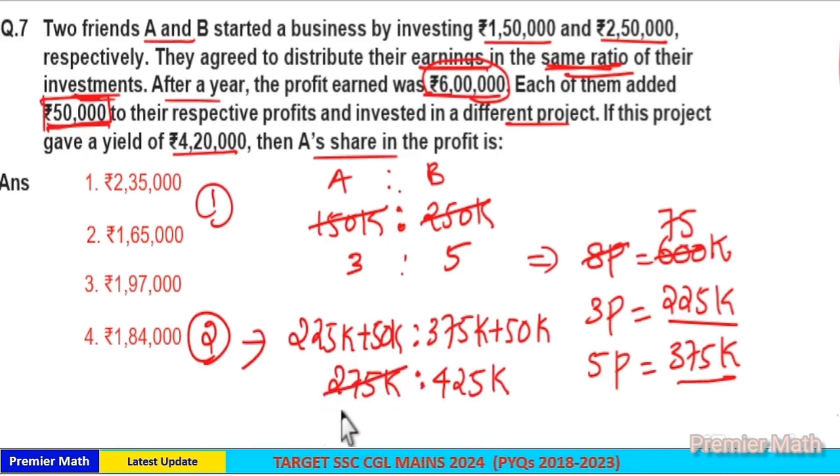25 goes 8 times in 200, 3 times in 75, so 8 plus 3 is 11 times in 275. And 25 goes 4 into 4, 16 times in 400, and 16 plus 1 is 17 times in 425. So 11 is to 17 is the ratio.